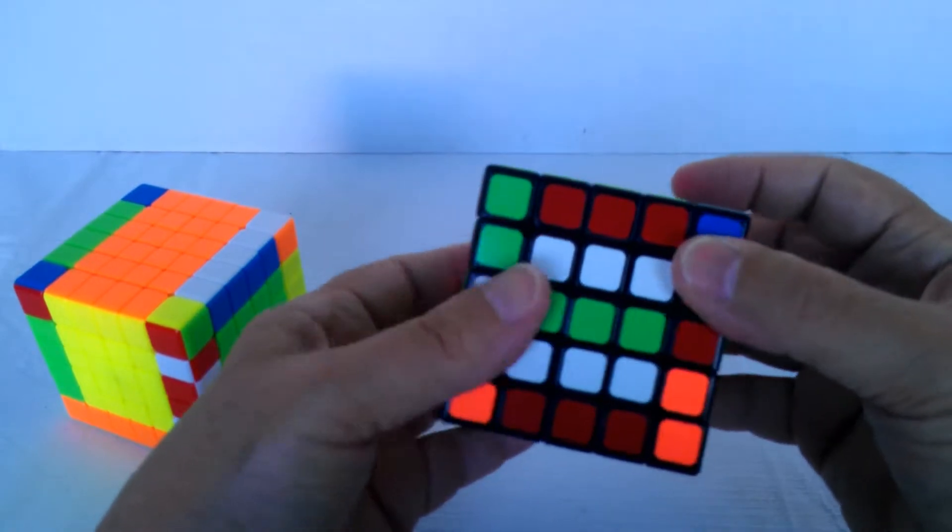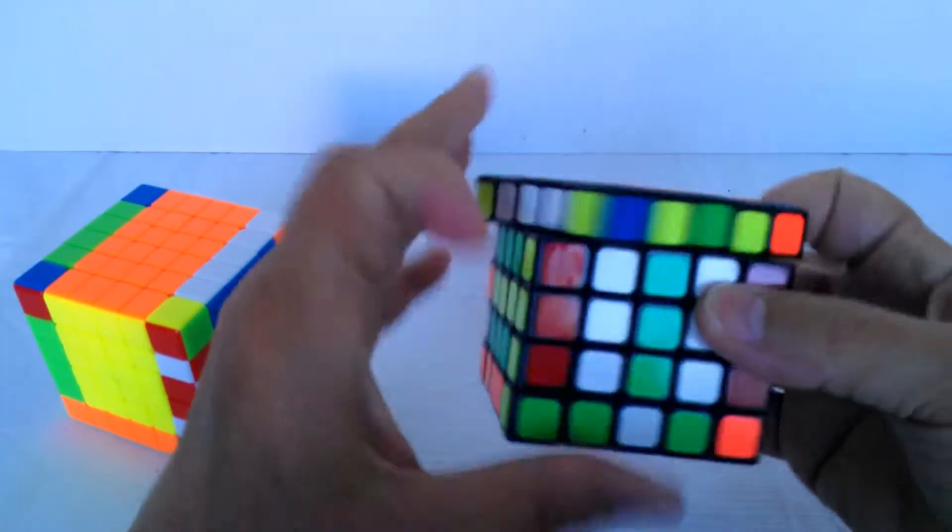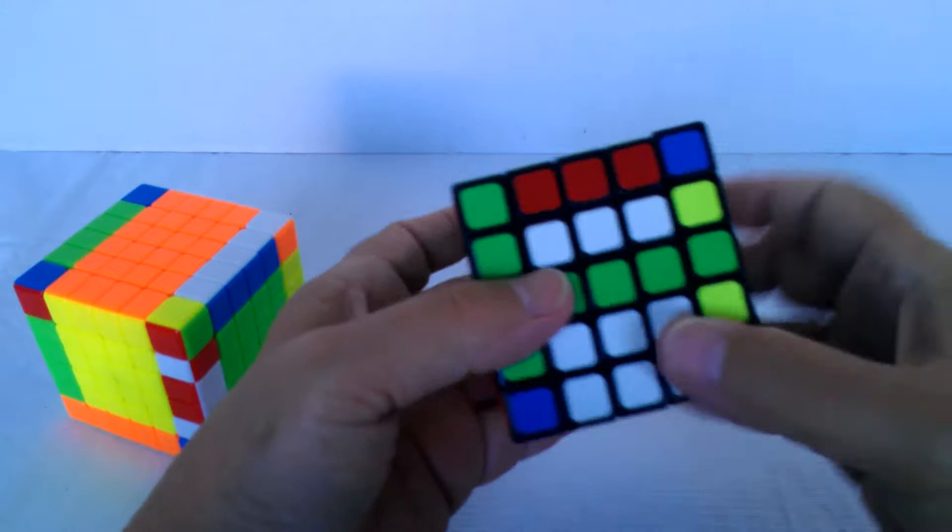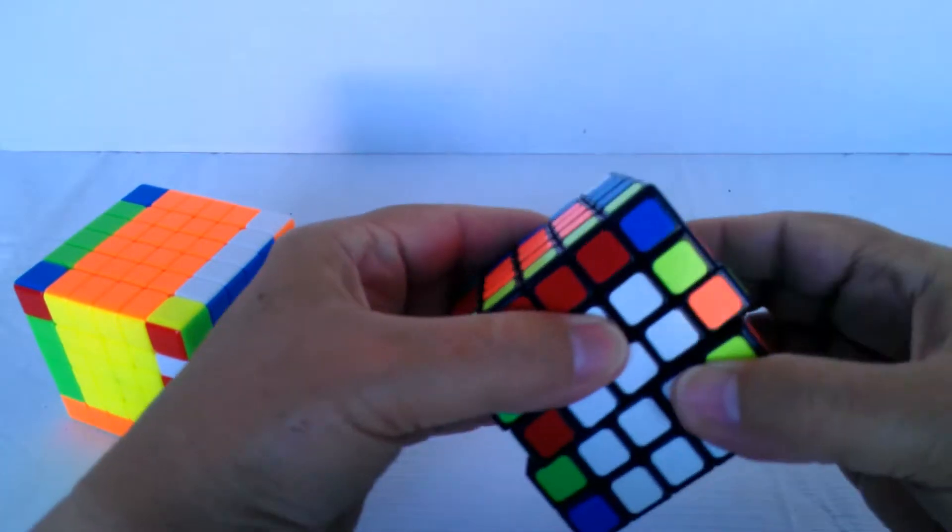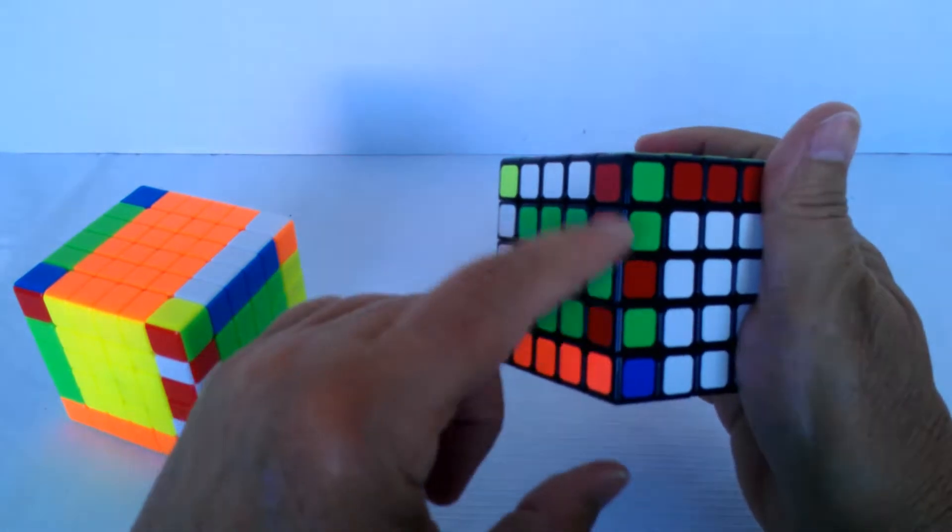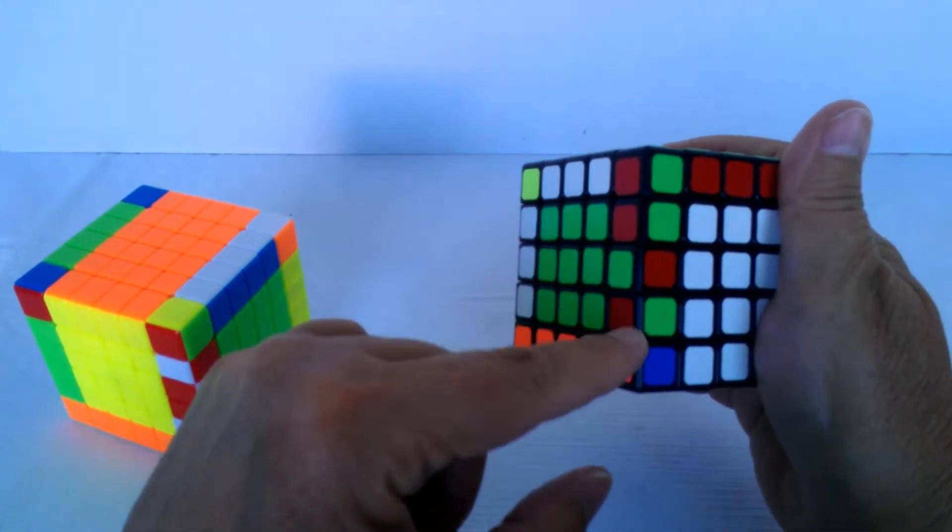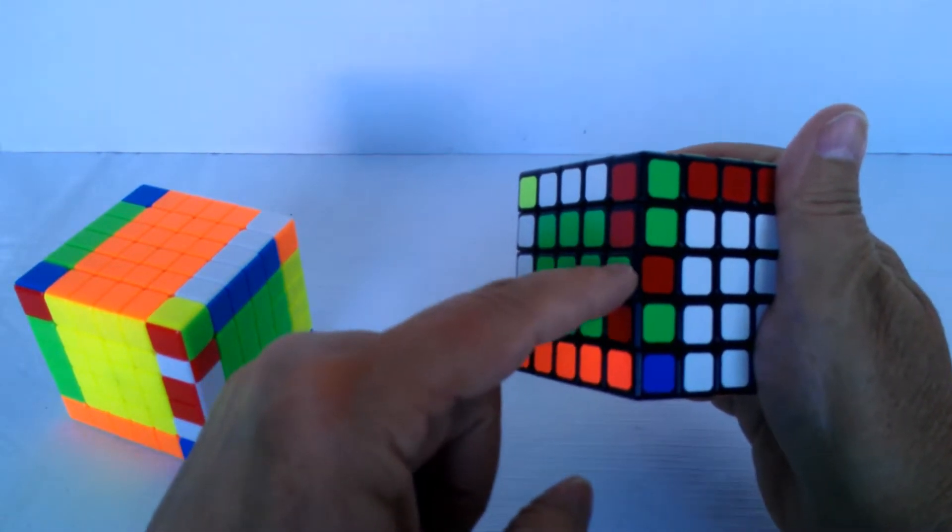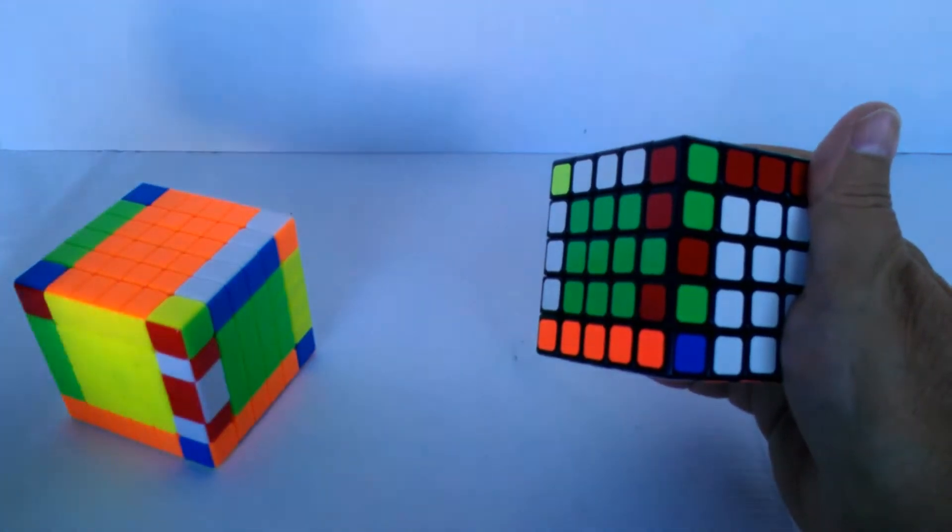I can show you what that looks like. So in this case, you've got the edge pieces all together, but the center is flipped different from those two.